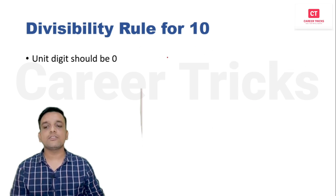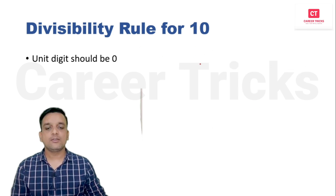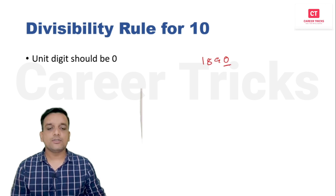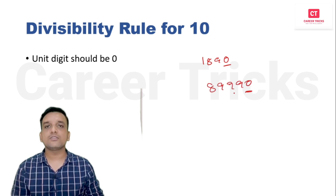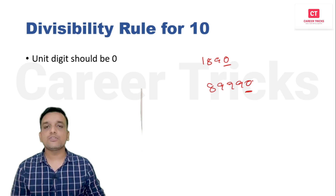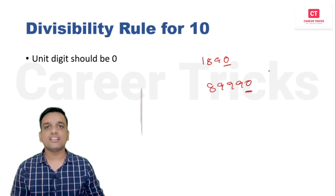Divisibility rule for 10: if the unit digit is 0, the number is divisible by 10. Any number ending in 0 is divisible by 10. If the unit digit is anything other than 0, it is not divisible by 10.